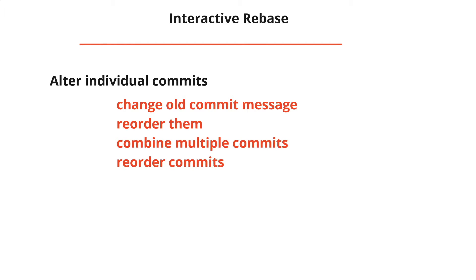Interactive rebase allows you to manipulate your commit history: you can change old commit messages, reorder commits, combine multiple commits into one, and more. A practical example: if you're done developing a feature branch before merging it back into the main branch, you can clean up the commit structure so it's easier for others to understand. If you used 50 commits for a feature, you don't want all 50 going into the main branch polluting the logs — you can combine them all into one single commit message.